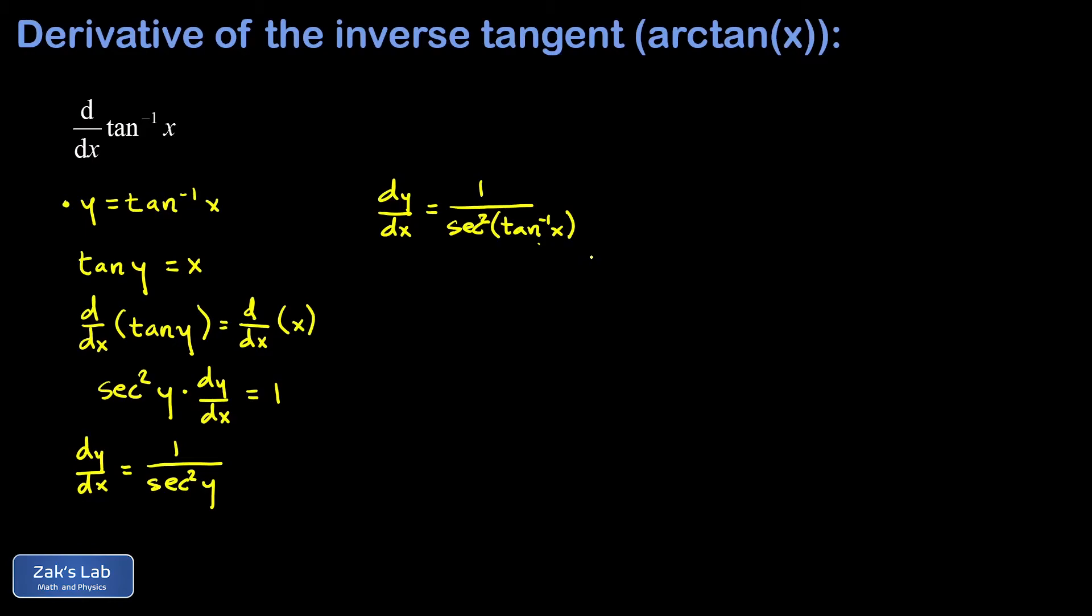So we can visualize the angle whose tangent is x and then take the secant of it. We're going to put the inverse tangent of x, the angle whose tangent is x, right here. And remember we had a name for that - that was just y - so we may as well label it accurately.